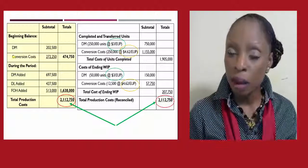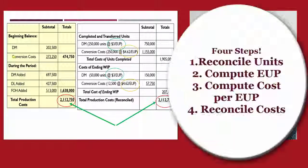To summarize, the weighted average cost approach has four steps: first, reconcile the flow of units; second, compute the equivalent units of production; third, compute the cost per equivalent unit; and fourth, reconcile the costs, as shown in this slide.